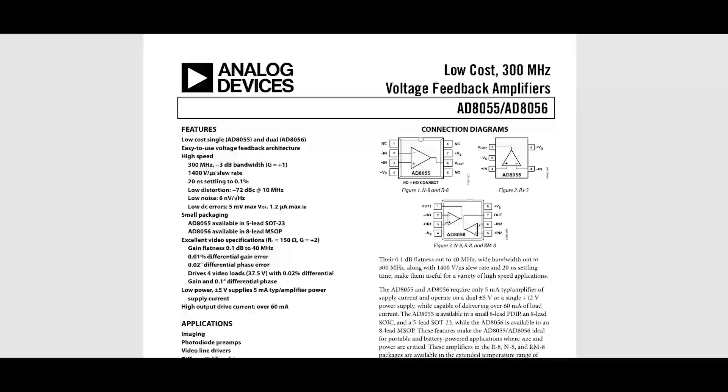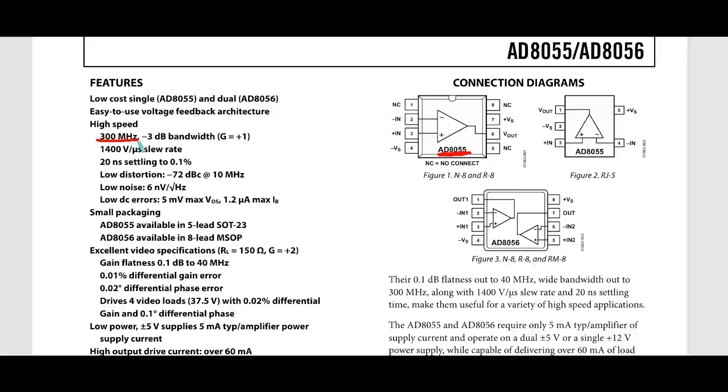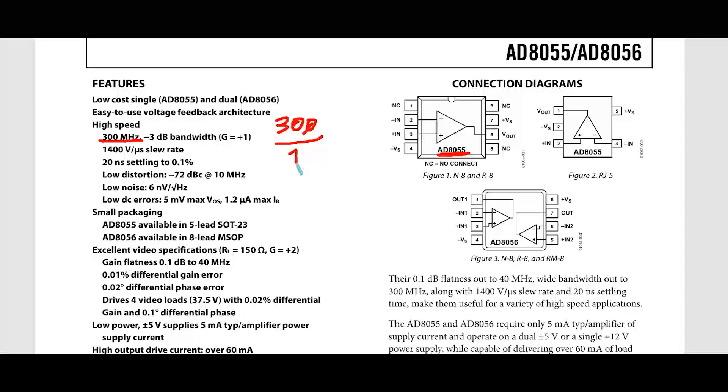I found another IC with a bandwidth of about 300 MHz, which means that for our target gain of 11, we will have an effective bandwidth of around 27 MHz. Much better.